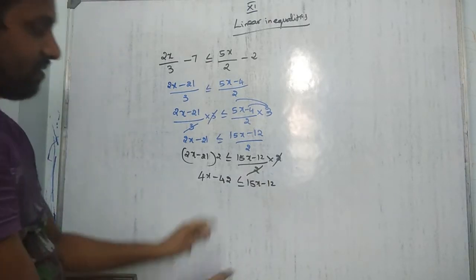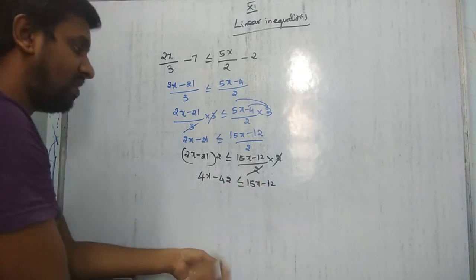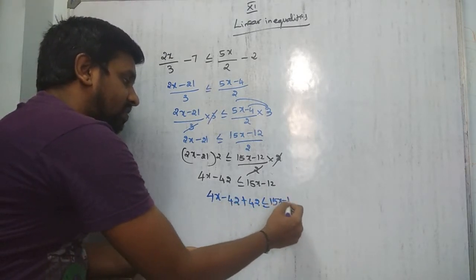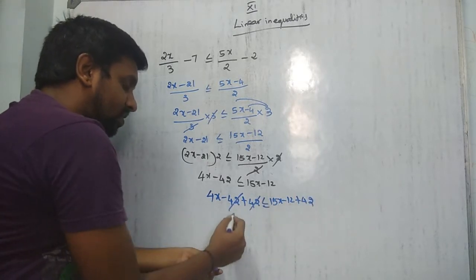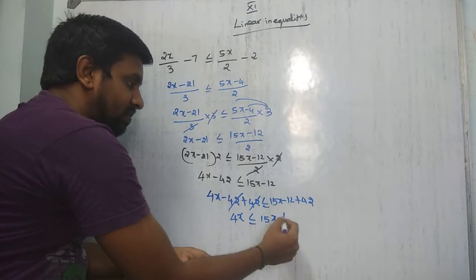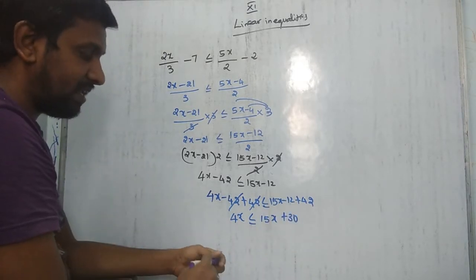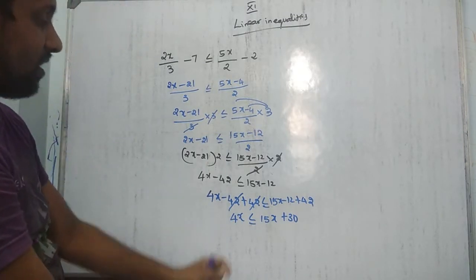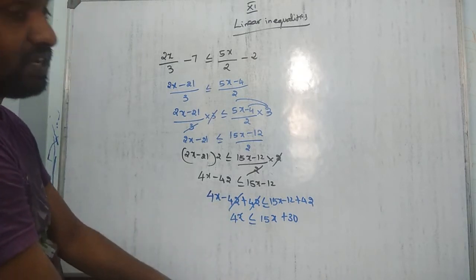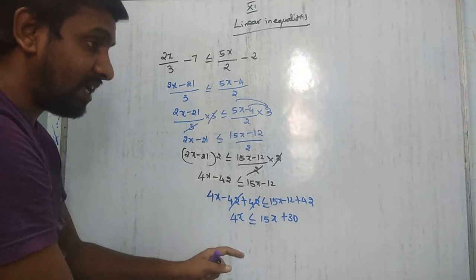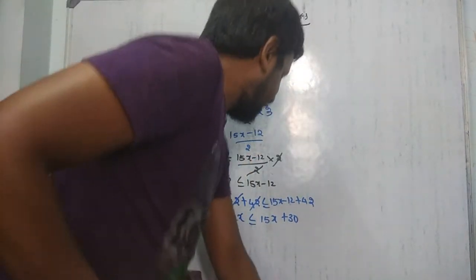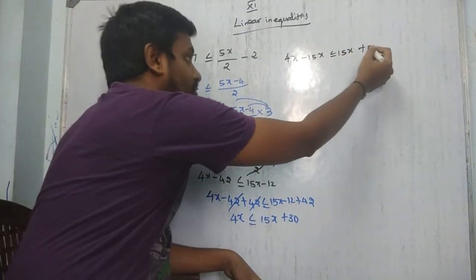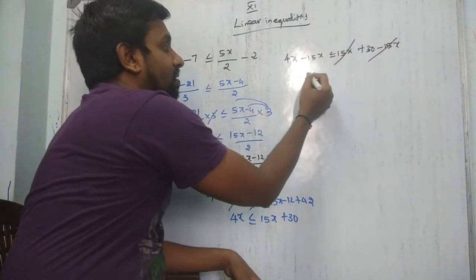Continuing: from 4x - 42 ≤ 15x - 12, add 42 to both sides: 4x ≤ 15x + 30. Now subtract 15x from both sides: -11x ≤ 30. I am choosing to move 15x to introduce one more concept.